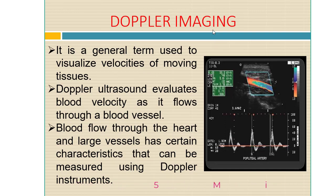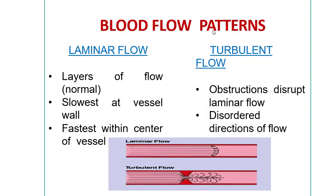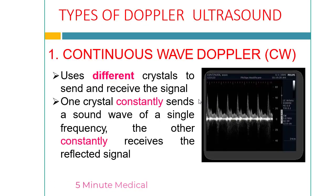Doppler imaging is a general term used to visualize velocities of moving structures such as blood. Doppler ultrasonography evaluates blood velocity as it flows through blood vessels. Blood flow through the heart and large vessels has characteristics measurable by Doppler instruments. Two types of flow are seen: laminar flow, which is straight and normal, and turbulent flow, which occurs when there is an obstruction.